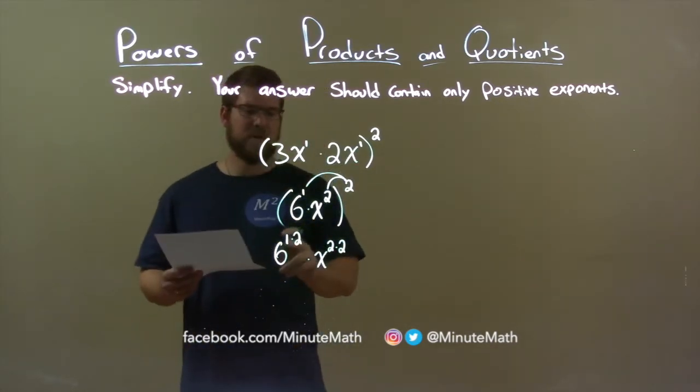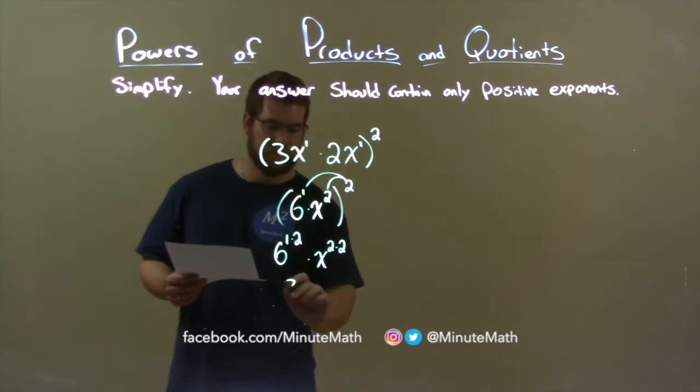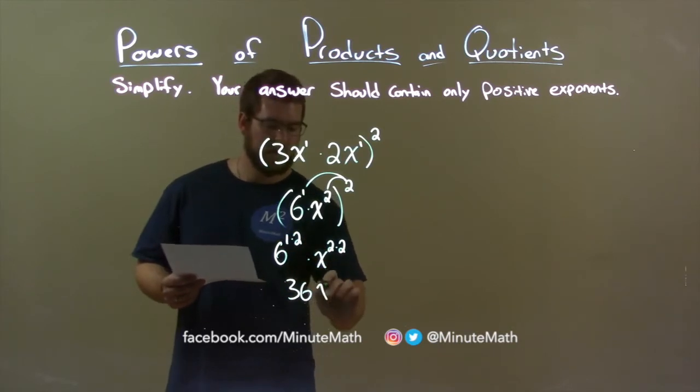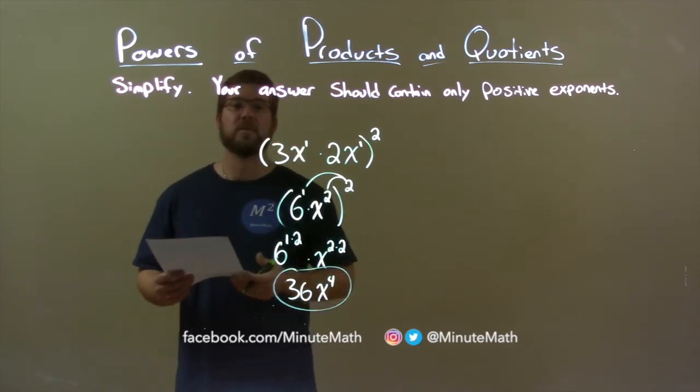Well, 1 times 2 is 2, and 6 squared is 36. 2 times 2 is 4, and so we have x to the 4th power, giving us our final answer, 36x to the 4th power.